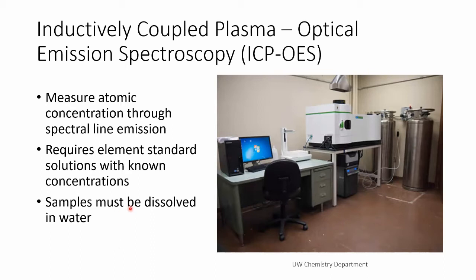Inductively coupled plasma optical emission spectroscopy is a type of spectroscopy that measures the concentration of atomic samples through line emission spectroscopy. Essentially, we're giving these atoms energy and they're emitting characteristic wavelengths, and we can measure those intensity wavelengths to calculate the concentration of that sample. This technique requires some standard references in order to build up a baseline of concentrations that we can use to calculate our unknown concentration.